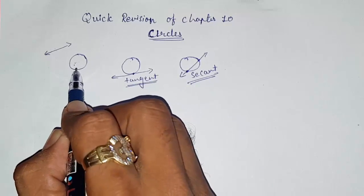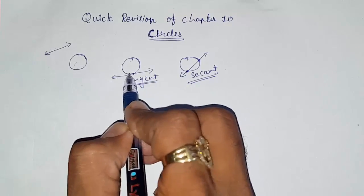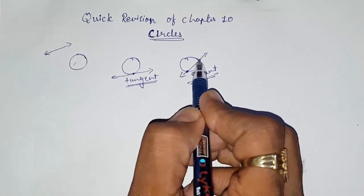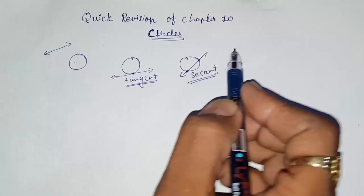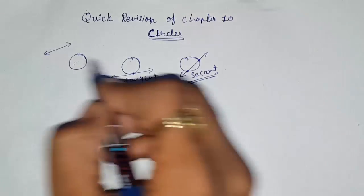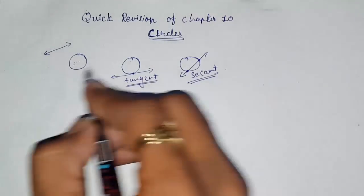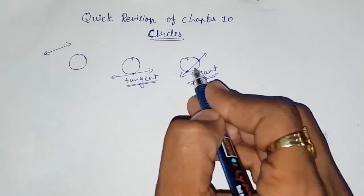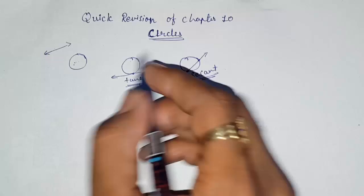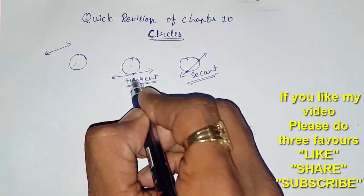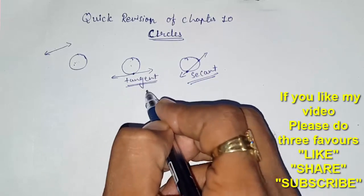There are only three conditions between a line and a circle: they will not intersect, they will intersect at one point, or they will intersect at two points. There is no other condition beyond these three. Now we are going to study about tangents in detail in this chapter.